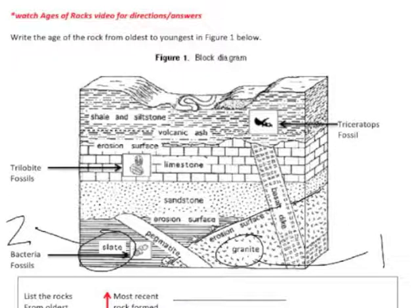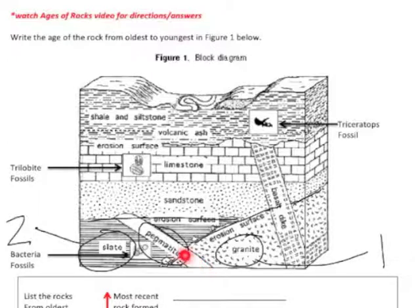Then there's an erosion surface here, and there is also pegmatite. Pegmatite cuts through the granite and the slate. So, using the Law of Cross-Cutting Relations, pegmatite is younger than the granite and the slate. So pegmatite is going to be number 3.